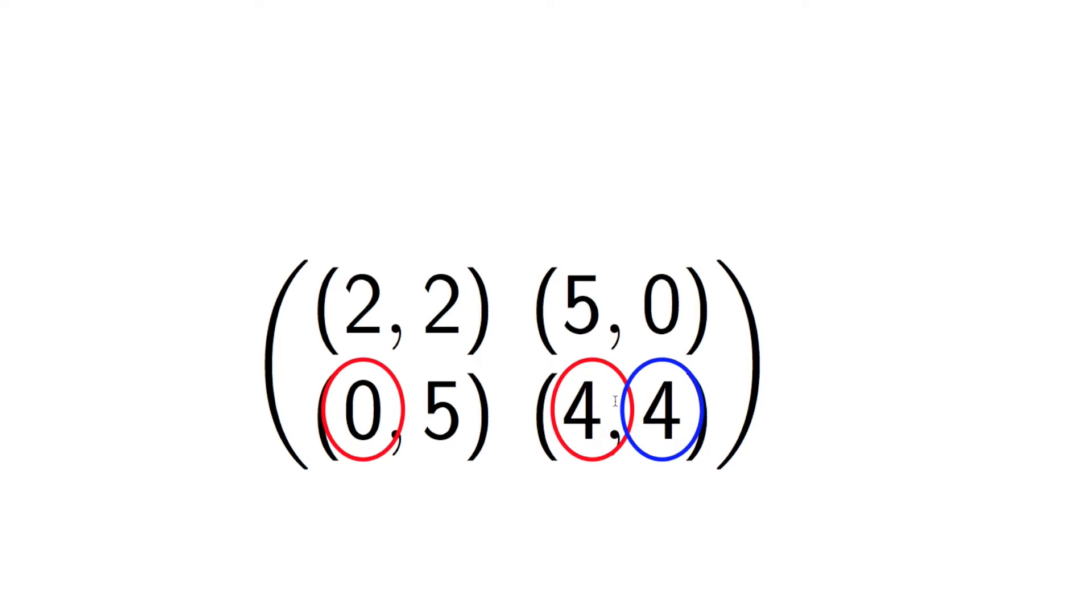And then if we swap this and we say, okay, if we know that player one is playing the second row, what should player two do? Well they should defect. And similarly with the first row.